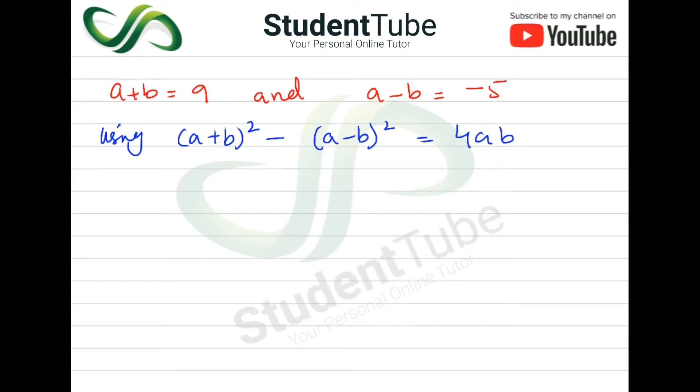So formula we have applied. Now we will put value here. So A plus B value is 9, 9 square, minus A minus B value is minus 5 square is equal to 4AB.